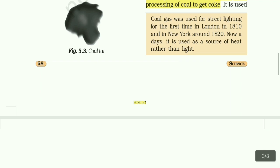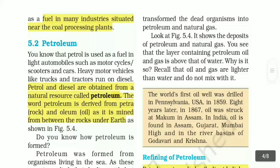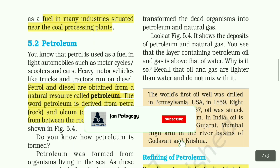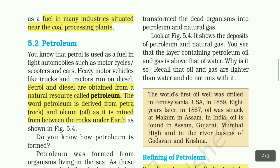The next topic is petroleum. Petrol and diesel are obtained from a natural resource called petroleum. The word petroleum is derived from 'petro' meaning rock and 'oleum' meaning oil, as it is mined from between the rocks under the earth.